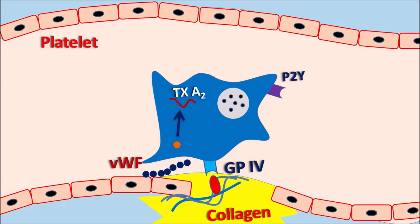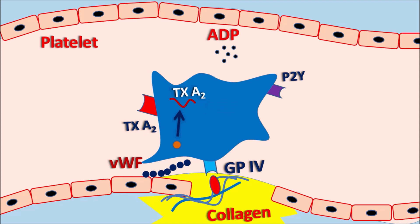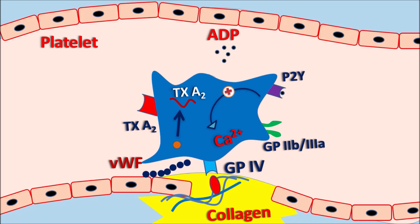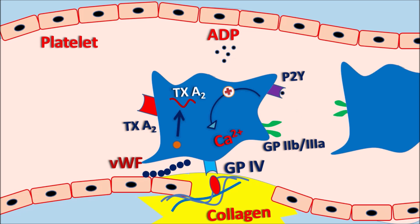Platelets are also expressed with receptors like the P2Y receptors, which are the receptors for adenosine diphosphate. Similarly, they are also expressed with thromboxane A2 receptors. After activation, platelets release mediators — one important one is ADP, which acts on the P2Y receptors, thereby increasing intracellular calcium levels. When calcium is increased within the platelets, it increases the expression of GP2B/3A receptors. These GP2B/3A receptors are responsible for platelet aggregation. Any other platelet expressed with GP2B/3A receptor is connected through fibrinogen, so GP2B/3A receptors play an important role in platelet aggregation.